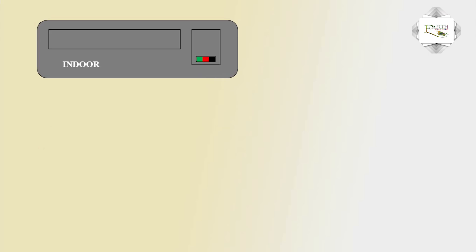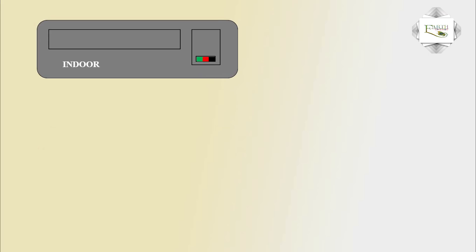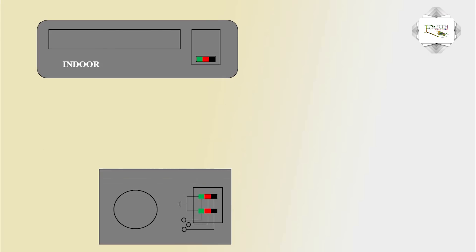Second Type: Indoor airing Air Condition, First Indoor airing Air Condition, Outdoor airing Air Condition. DP Circuit Breaker — means Double Pole Circuit Breaker. DP Switch, 20 Ampere.